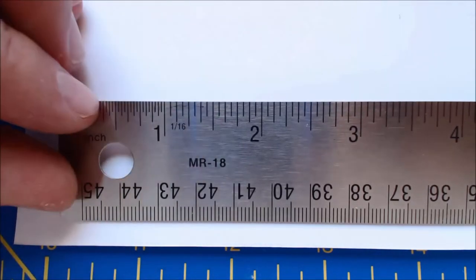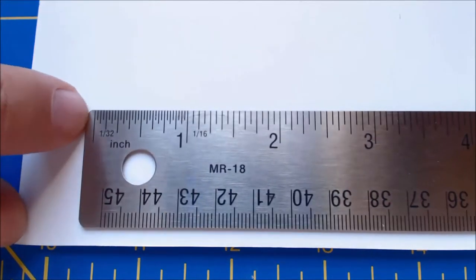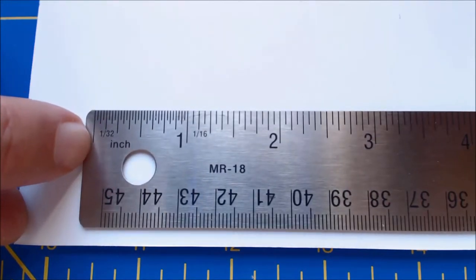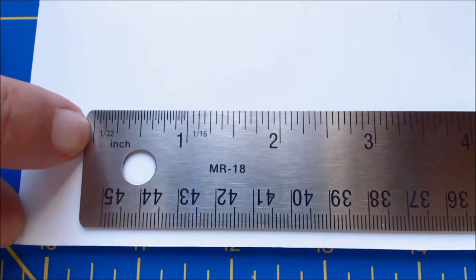An important note about this ruler is that it actually has a zero mark as well. That mark is actually on the ruler. And this is a great kind of ruler for doing the sort of layout we're doing.